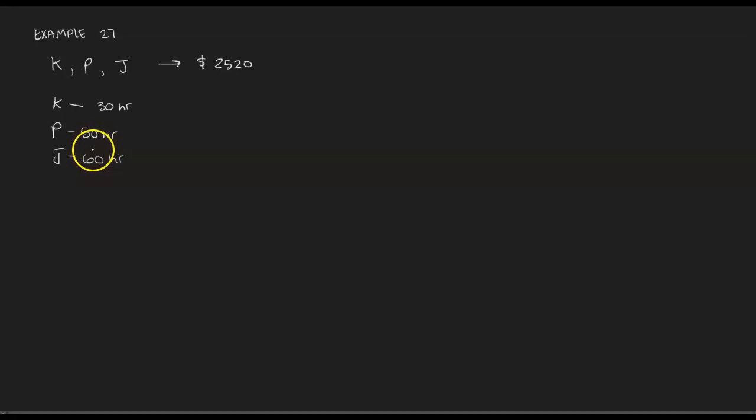If we wanted to figure out how much to pay each person, what we would do is first come up with an expression that shows the amount each person deserves. For example, Kai who worked 30 hours should be paid X amount for her hourly rate. So let's let X represent the hourly wage. Kai should be paid 30 times X because Kai worked 30 hours. Paulus should be paid 50 times X, and then Judy should be paid 60 times X.